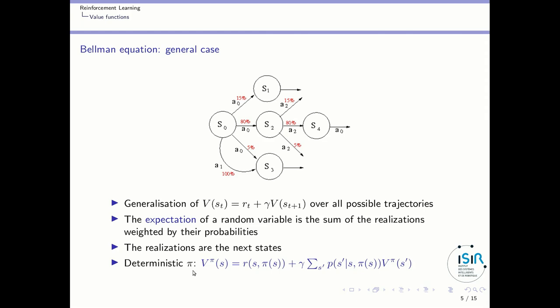In the case of a deterministic policy, you get that particular formula: the value of being in a state is the reward for taking a particular action — for instance A0 — plus gamma times the sum over all probabilities of moving to that particular state times the value of that state. So if you have a greater probability of moving to S2, the value of S2 will be more important in determining the value. For a stochastic policy, you get a slightly different formula because you have to consider the probability of taking an action given a state — instead of P of S, you have the probability of A given the state.